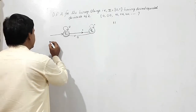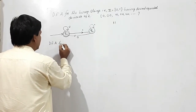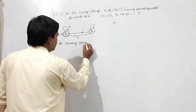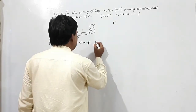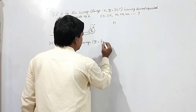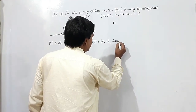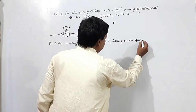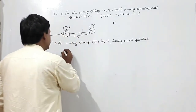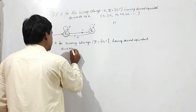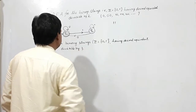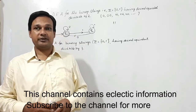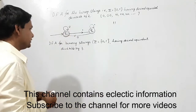Now I will construct a DFA for binary strings where sigma is {0, 1}, having decimal equivalent divisible by 3. If I divide any number by 3, how many remainders will there be? The remainders are 0, 1, and 2. So there will be 3 states.